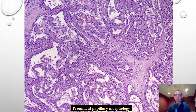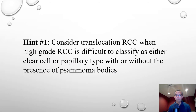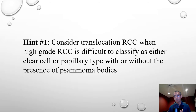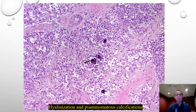These tumors also frequently have prominent papillary morphology. When these tumors were originally described, one very helpful hint is that whenever you have a high-grade renal cell carcinoma that is difficult to classify as either clear cell or papillary type, one should consider translocation renal cell carcinoma, especially when psammoma body-type calcifications are present. Here is an example of dystrophic psammoma body-type calcifications.